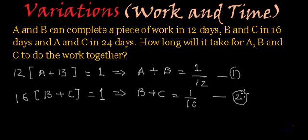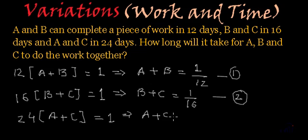And in the third part they are saying A and C finish the job in 24 days. That means 24 multiplied by A plus C is equal to 1. And from here we will get A plus C is equal to 1 by 24. Right? And I am going to call this as equation number 3.